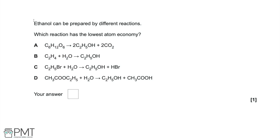In this question we're told that ethanol can be prepared by different reactions, and we've been asked which reaction has the lowest atom economy. Atom economy is a measure of the percentage by mass of all of the reactants that end up in the desired product. In this case, ethanol is our desired product.